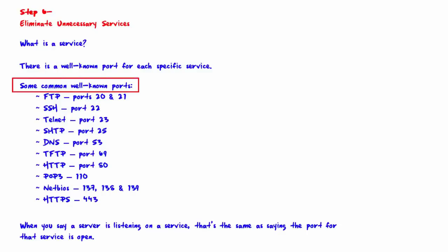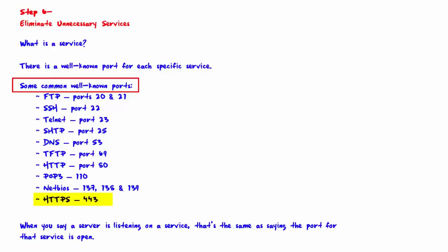Common well-known ports: FTP ports 20 and 21; SSH port 22; Telnet port 23; SMTP port 25; DNS port 53; TFTP port 69; HTTP port 80; POP3 port 110; NetBIOS ports 137, 138, and 139; and HTTPS port 443. If you work with TCP/IP, these well-known ports should be memorized.